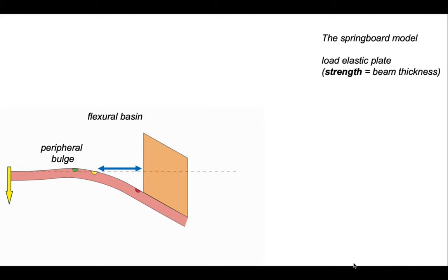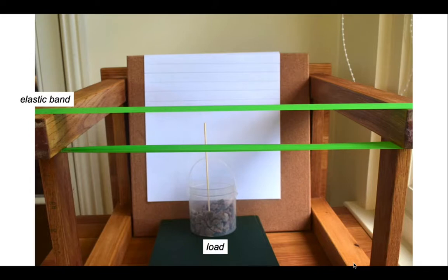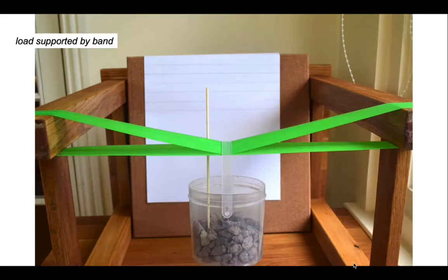Let's just explore this a minute. So here we've got a stretched out green elastic band. And onto that, we're going to suspend a load represented by that beaker with pebbles in it. We've also put a marker, which is that skewer pointing upwards so we can see how the load behaves.